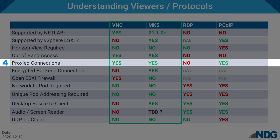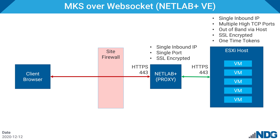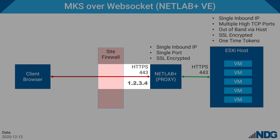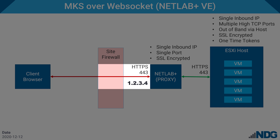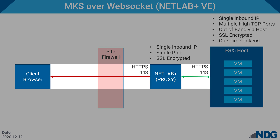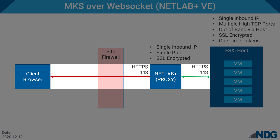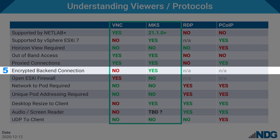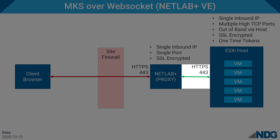Number four, NetLab VE provides proxied MKS connections. All MKS connections between client and virtual machines are proxied by NetLab VE. Only a single IP address and port needs to be opened at the site firewall. NetLab VE only allows connections to authorized virtual machines via the scheduler. Display connections are terminated at the end of the lab reservation. Number five, MKS uses an encrypted back-end connection. All MKS connections from front to back use SSL.